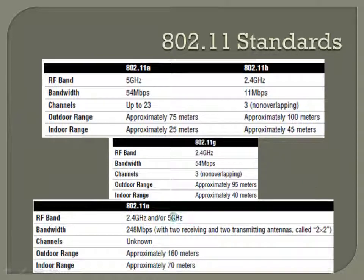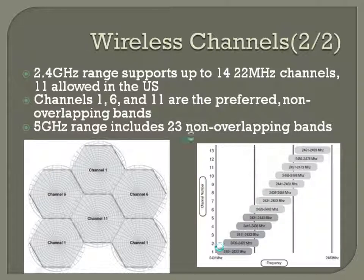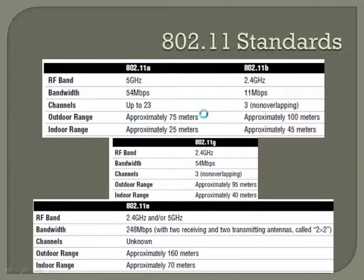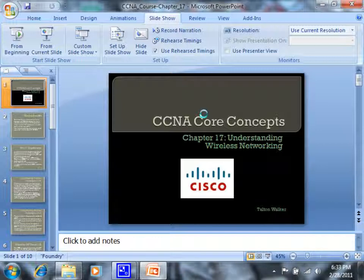802.11n uses both 2.4 GHz and/or 5 GHz. The big benefit is bandwidth, and it also supports many more than three non-overlapping channels. As a result, the meshing problems we discussed — ensuring channels don't overlap — apply mainly to the older 802.11b/g standards, which are still widely used today. In a few years, 802.11n or a successor standard may become dominant and reduce these concerns.